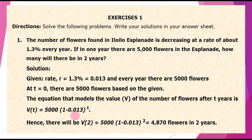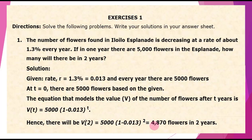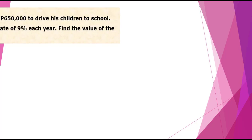Solving this for 2 years, we are asked for the number of flowers after 2 years. Hence, we find V(2), substituting T equals 2. So we have V(2) equals 5,000 times the quantity 1 minus 0.013, raised to 2. Computing this in your scientific calculator, we have 4,870 flowers in 2 years.